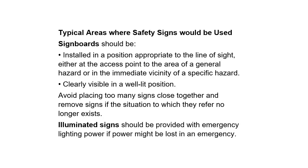Typical areas where safety signs would be used: signboards should be installed in a position appropriate to the line of sight, either at the access point to the area of a general hazard or in the immediate vicinity of a specific hazard. They should be clearly visible in a well-lit position. Avoid placing too many signs close together, and remove signs if the situation to which they refer no longer exists.